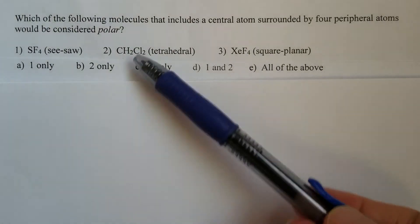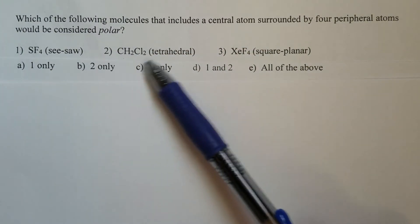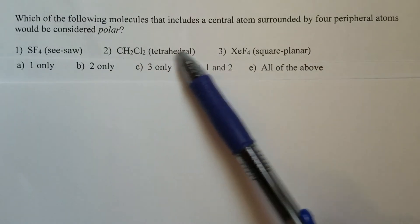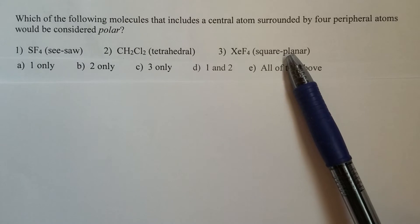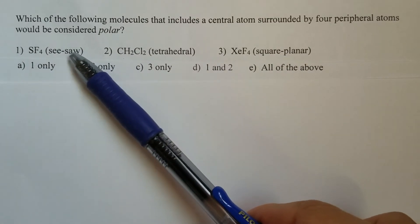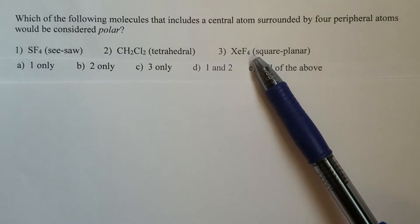Normally for a problem like this, we need to start with the Lewis electron dot formula to determine the molecular geometry. But since the molecular geometry is already given, we don't need to do that part.